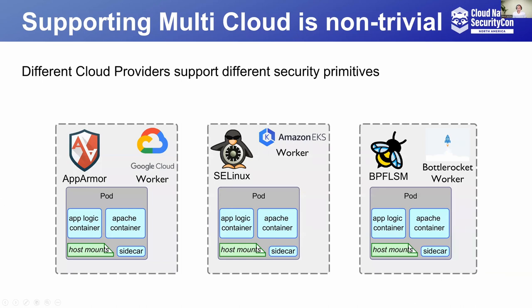The security context requires specifying native AppArmor or SELinux policies. Different cloud providers support different Linux security modules. For example, Google Container-Optimized OS supports AppArmor only by default, Amazon Linux 2 supports SELinux by default, and Bottlerocket supports SELinux and BPF LSM. It is a nightmare for a security administrator to operate in a multi-cloud environment. Even within the same cloud, there are good chances of a mix of nodes supporting AppArmor and SELinux, making it extremely difficult to use pod security context.